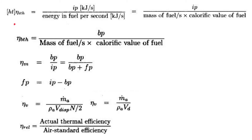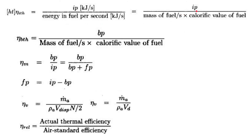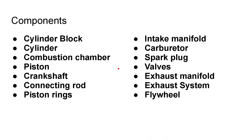Indicated thermal efficiency is indicated power divided by total energy available in fuel. IP is in watts and energy in fuel per second is also in watts, so: eta_ITH = IP / (calorific value of fuel × mass flow rate of fuel). The calorific value is in kJ/kg and mass flow rate of fuel in kg/s. The mass flow rate is calculated using the carburetor.